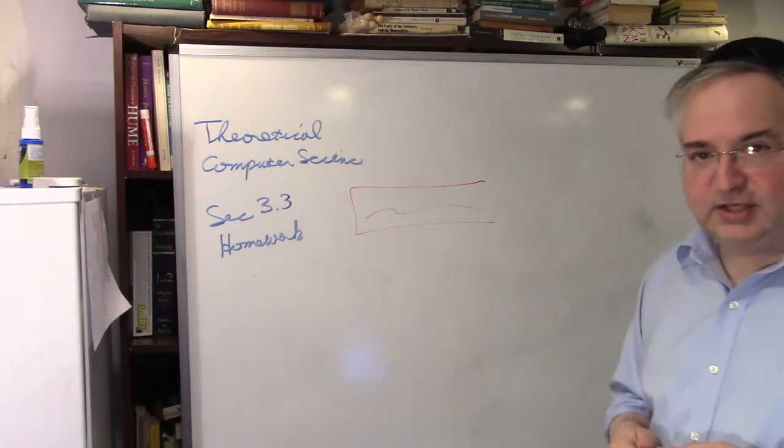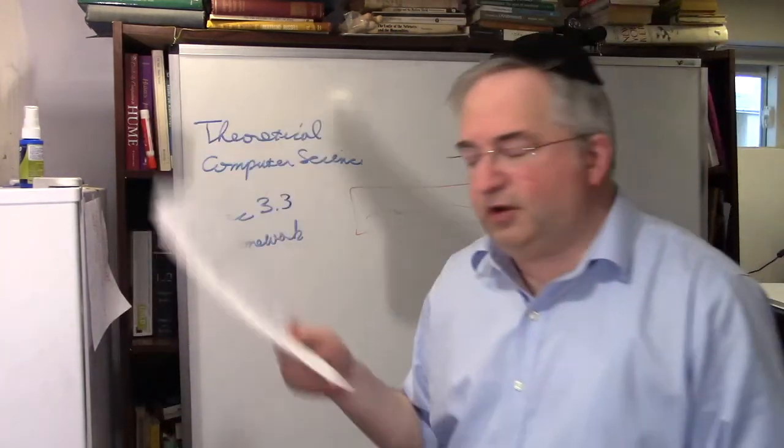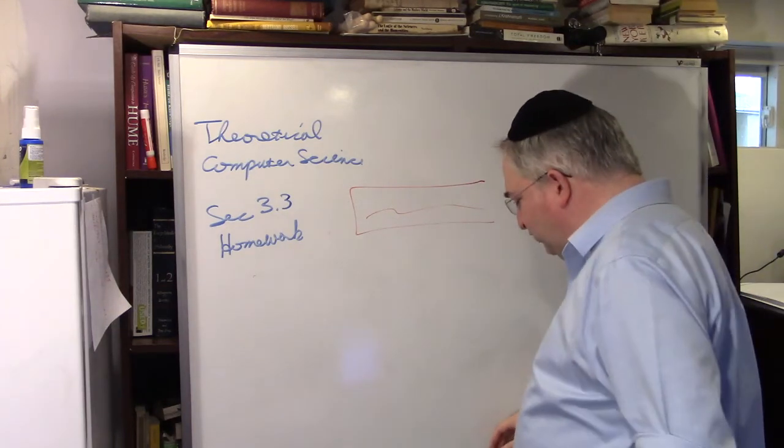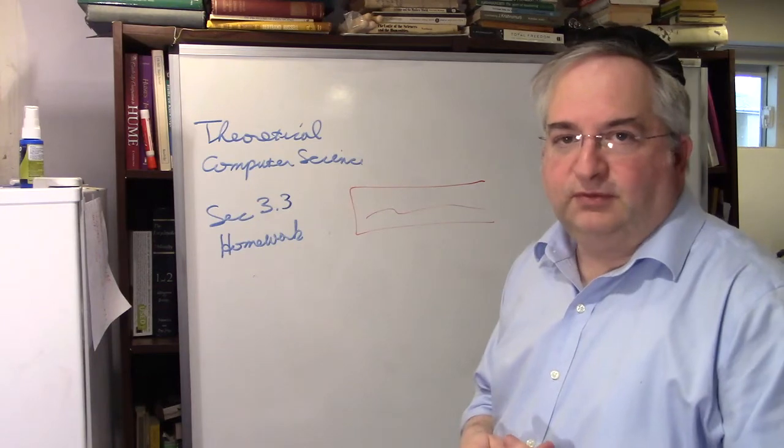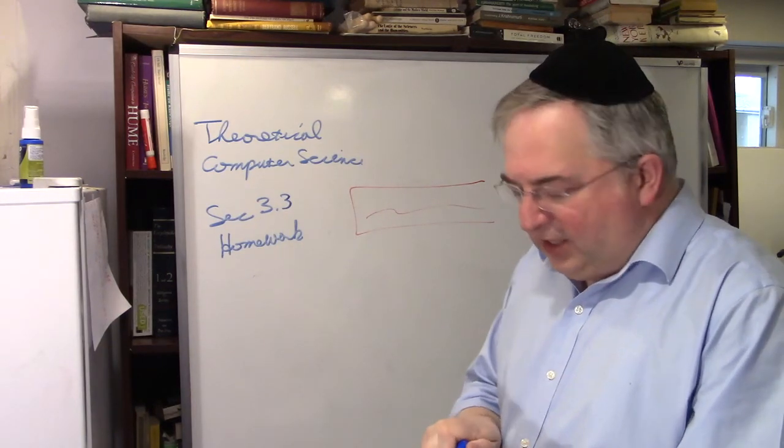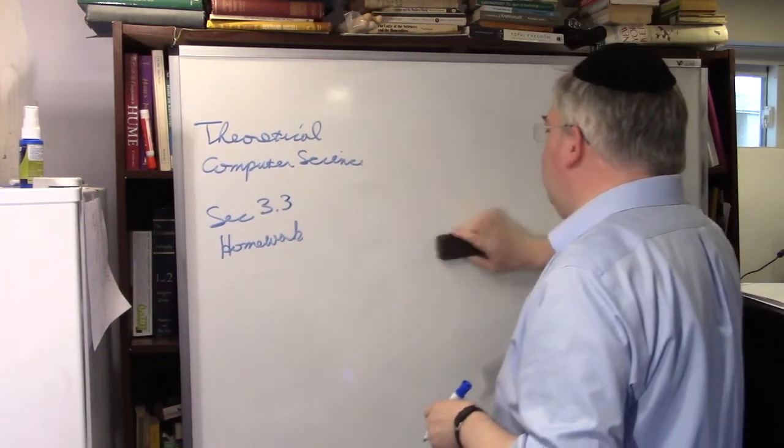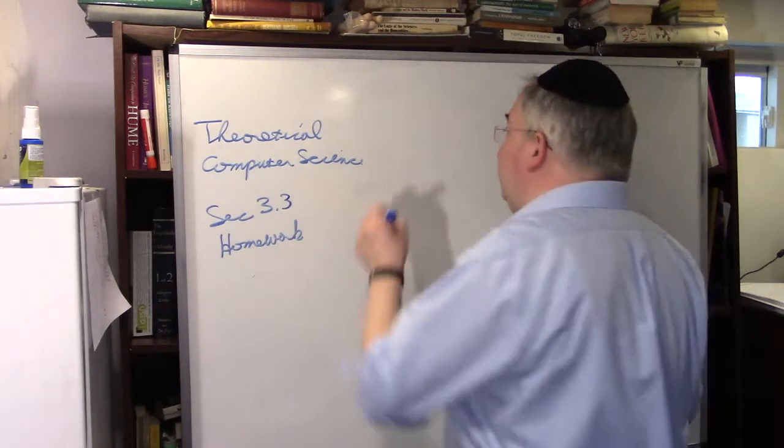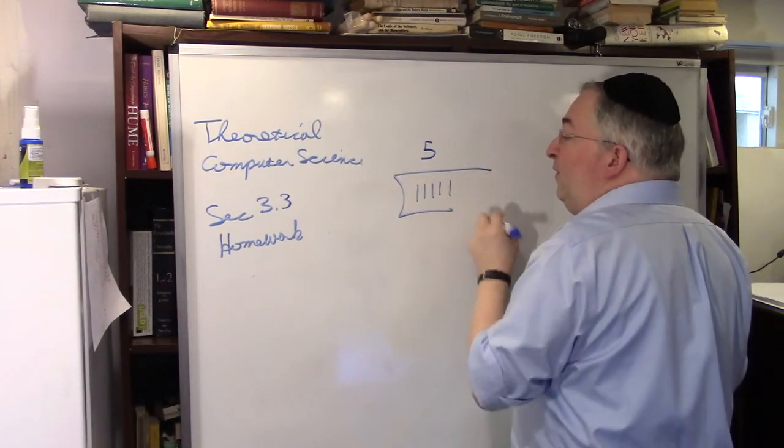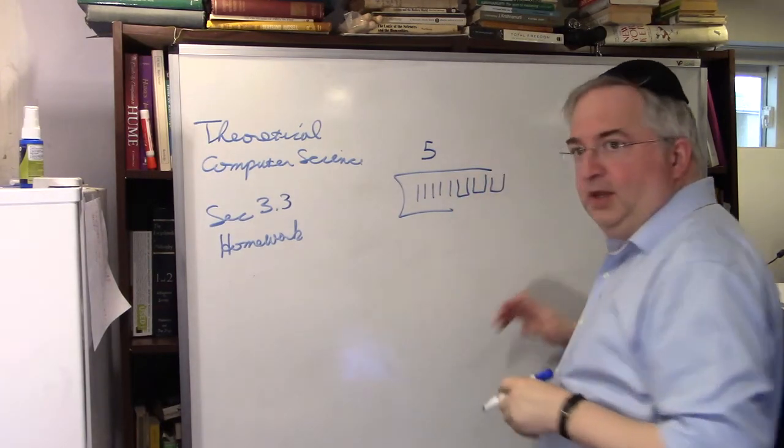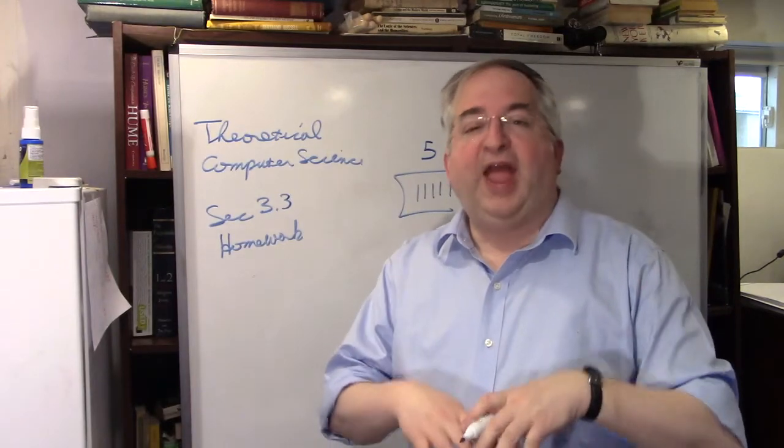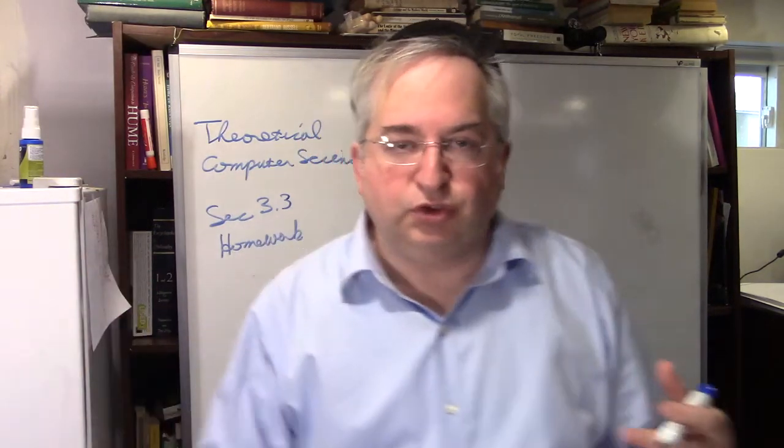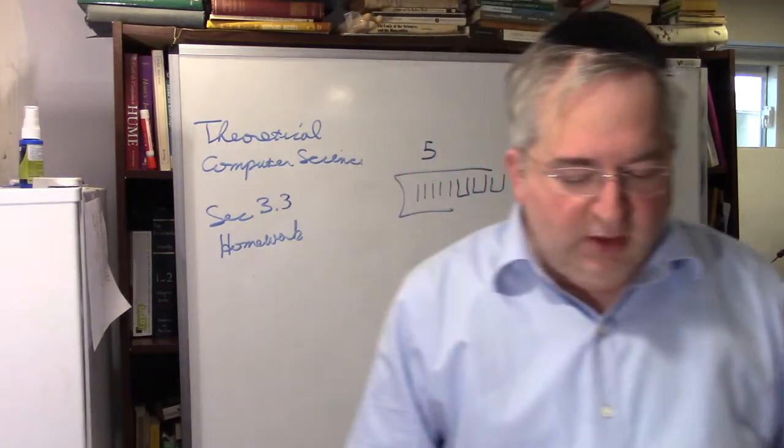The book doesn't really have any good exercises on this, so I made up three exercises. There's no real exact answers here. There are different methods of doing things, and we want to talk about these different methods. We already encoded the number five as a string with five ones. We're going to encode everything as strings and then manipulate them.